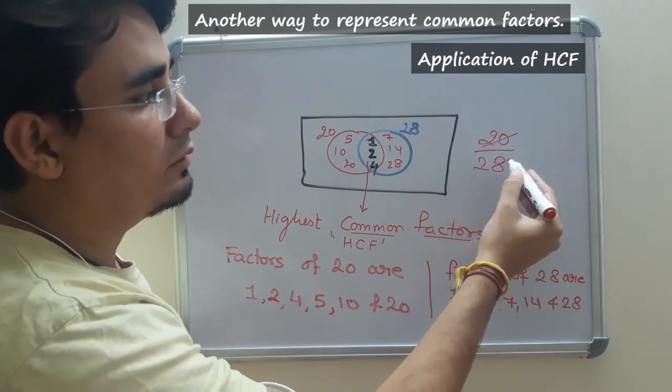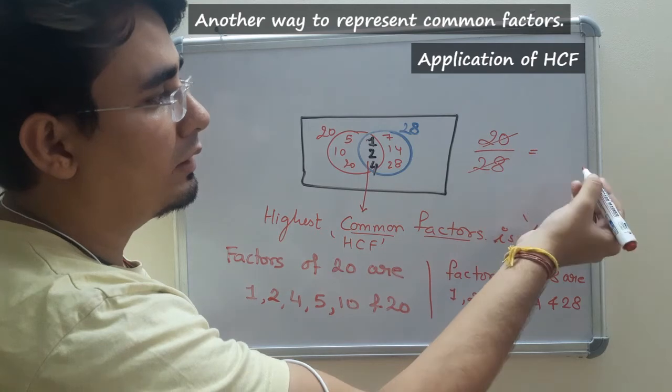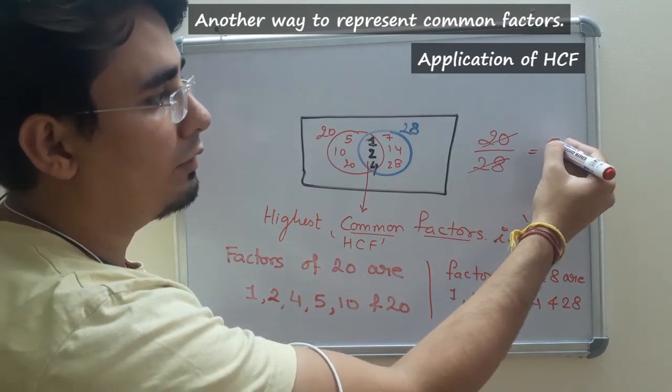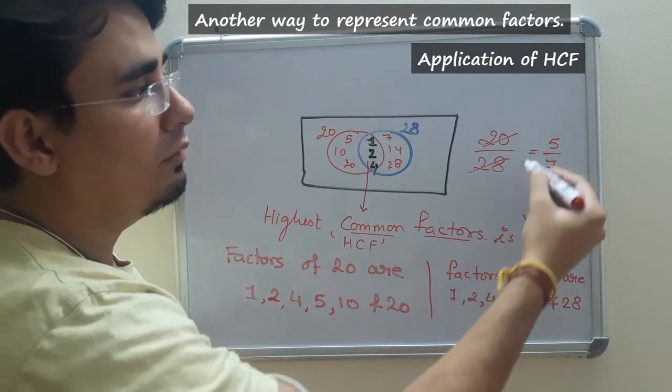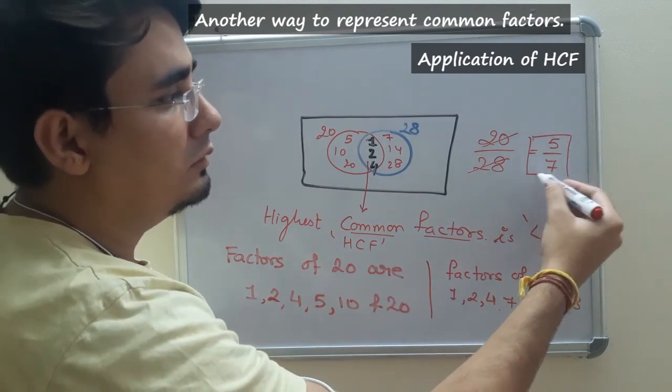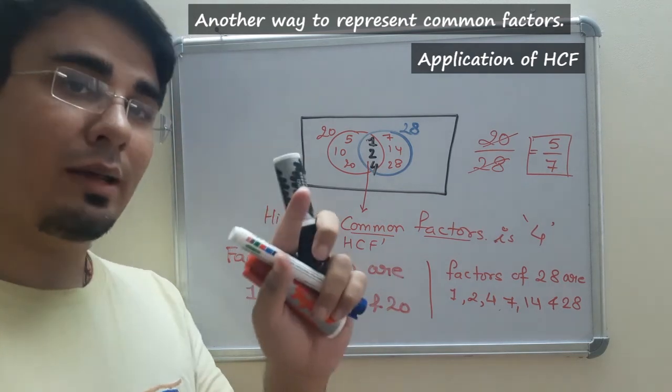Suppose you are having 20 upon 28 question and you need to reduce it. If you have the understanding of HCF, you will be able to know that these two numbers are divisible by 4. That is the common factor. Factor means divides. So I will be dividing this and this by 4. Dividing it by 4, I will be getting 5 and here I will be getting 7. So 5 upon 7 is the simplest form of 20 and 28. This is one application.